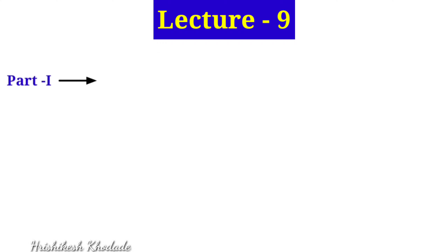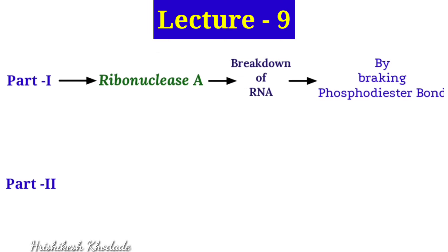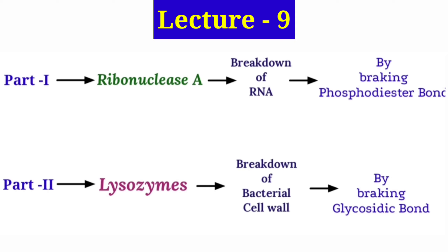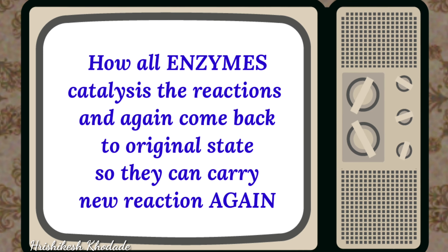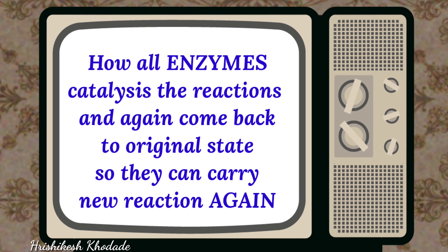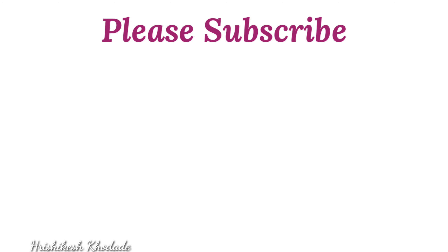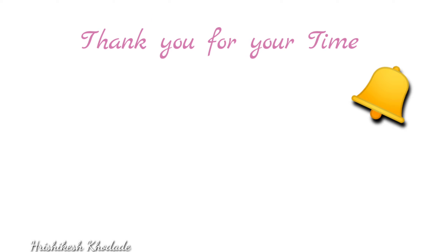In lecture nine, part one and part two, we discussed how enzymes perform their catalytic function — showing the example of RNA catabolism by ribonuclease in part one, and catabolism of glycosidic bonds in peptidoglycans of bacterial cell wall by lysozyme in part two. I hope you have understood how these enzymes perform their role and return to their original form to catalyze new reactions. Please subscribe to this channel and click the bell icon for notifications. Thank you for watching — we will meet in our tenth lecture. Take care.